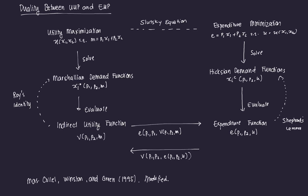In this video, we're going to explain the duality between the utility maximization process and the expenditure minimization process. Throughout the theory of consumer behavior, we've noted that there is this behavior with the way utility is maximized and the way that a consumer would try to minimize his or her expenditures. And we know that that duality exists in some mathematical regard.